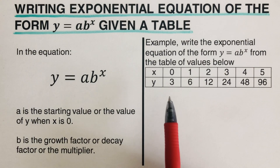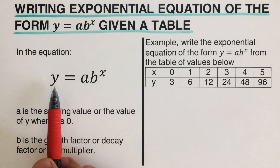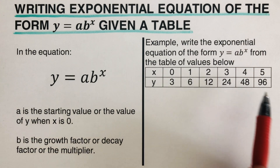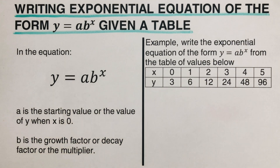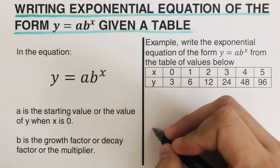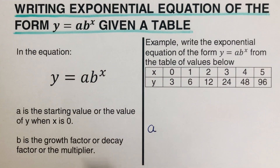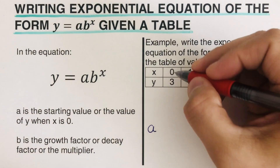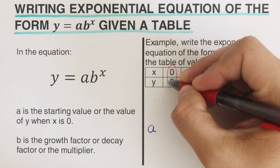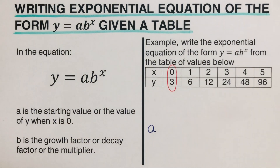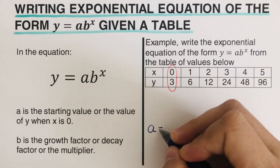Let's take this example right here. We determine what equation of this form should work for this table. First, we are going to determine what the a is. Our a is the value of y when x is 0. So when x is 0, that is our a. So our a here is 3.